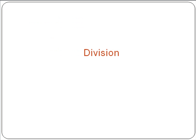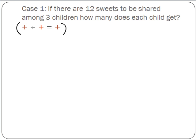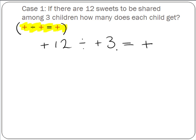Now we'll move on to division. The first case for division is a plus divided by a plus will give us a plus. If there are 12 sweets to be shared among 3 children, how many does each child get? In this case, we have plus 12 divided by plus 3. Our answer is going to be a plus, and 12 divided by 3 will give us 4. So each child will get plus 4 sweets.